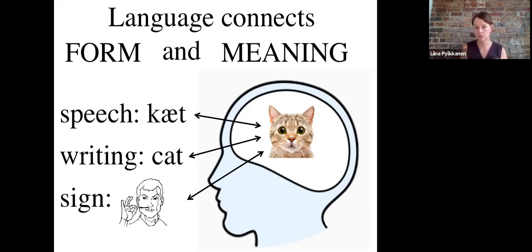So fundamentally, language is this connection between form and meaning, and there are different types of forms that can externalize language. And of course, in language comprehension, what we're doing is we're going from the form to the meaning. So you're getting one of these kinds of stimulations to a sensory organ—maybe you're seeing the visual form 'cat' or you're hearing the auditory sequence 'cat' or you're seeing the sign—and all of those allow you to go to the meaning, which is the conceptual representation of a cat. And in language production, when we're talking, we have some message in our mind and we then map that onto some type of form representation.